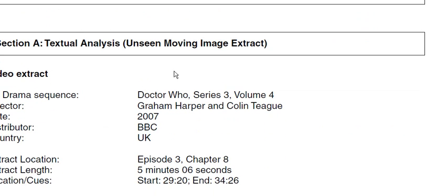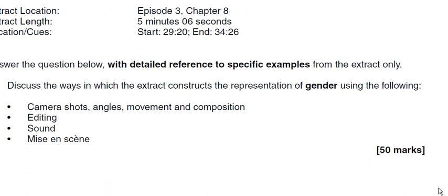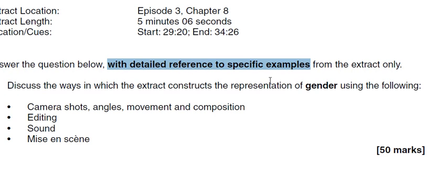Section A is textual analysis. In this instance, in 2009, it was a TV drama sequence — it was Doctor Who, Series 3, Episode 4, and it was five minutes, six seconds. This extract is available for you to watch on Takeaway Teacher in this playlist. You then answer the question below with detailed reference to specific examples from the extract only. So you're just writing about the extract that you see — you don't write about other things that you might have studied in class. They've made 'detailed reference to specific examples' bold — you can't write generally here. You're doing a tight, focused analysis of what you see.